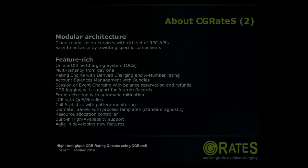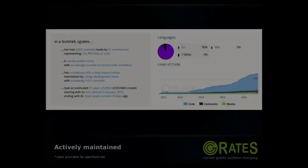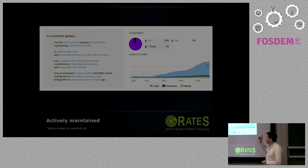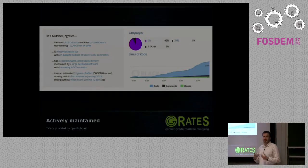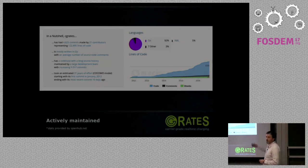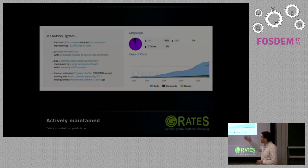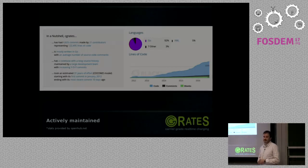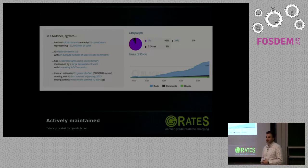A bit about history — we started around 2012 and we've kept pushing code ever since. We try to keep our codebase as small as possible, but it grew due to unplanned feature introduction. All of our code is written in Go — we were quite pioneers in Go back in 2012 when CG Rates started and Go was still in weekly releases. It was quite interesting to grow CG Rates alongside Go itself.